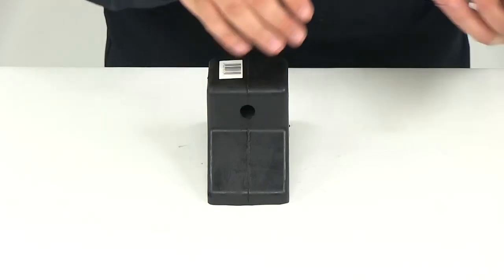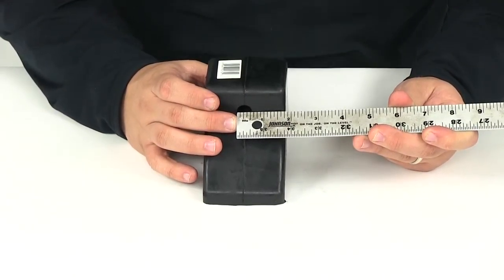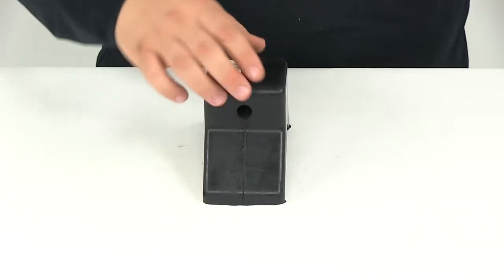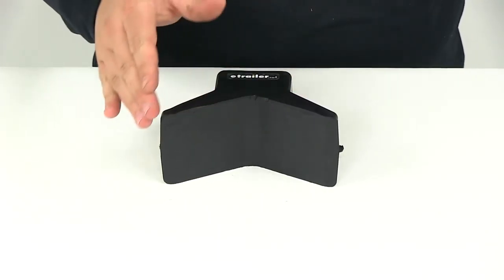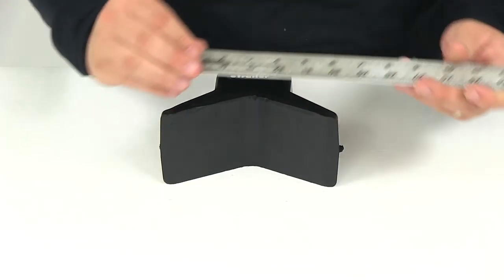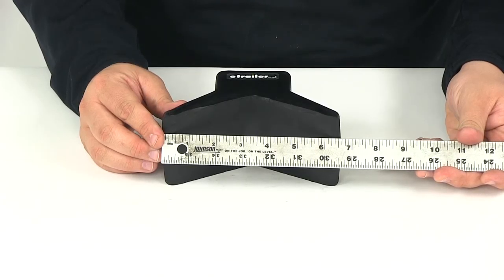It has a pre-drilled hole with a diameter of half an inch. If we measure the span, going from this point straight across to the opposite side, that gives us a measurement of about six and a half inches.